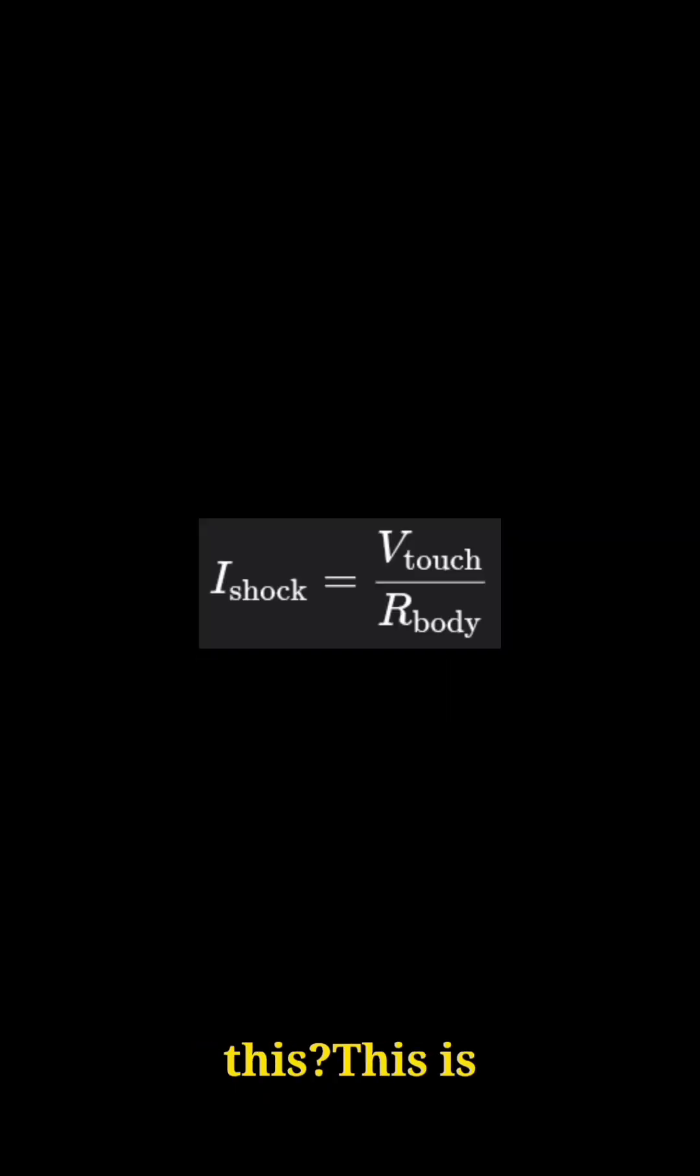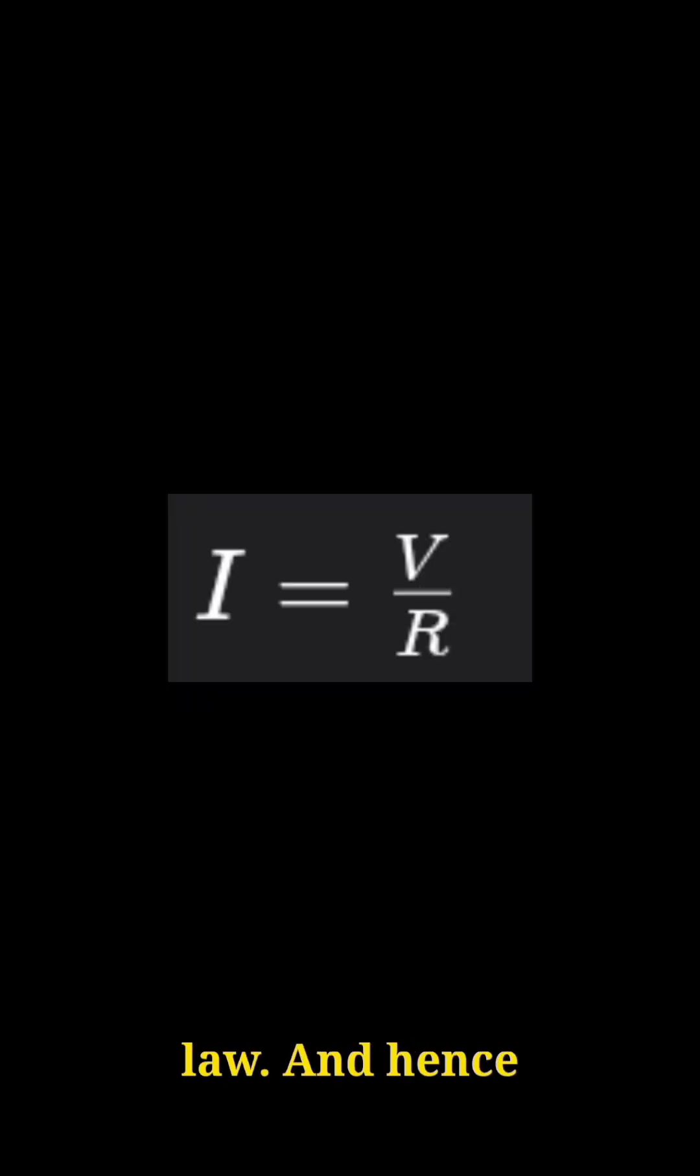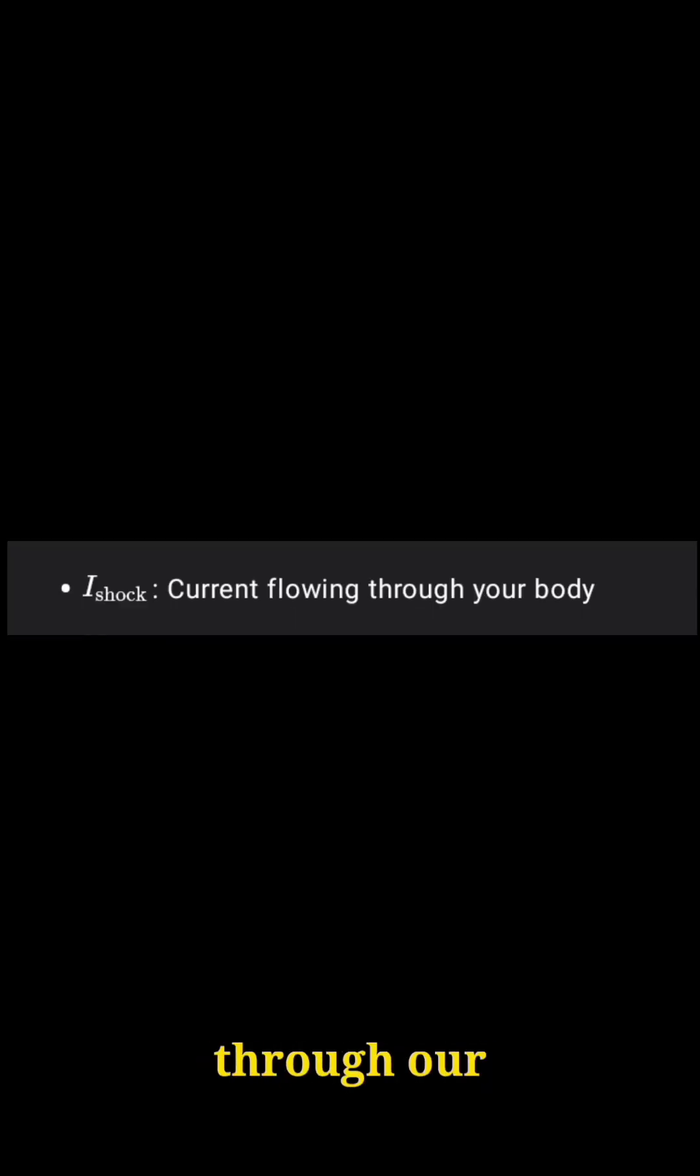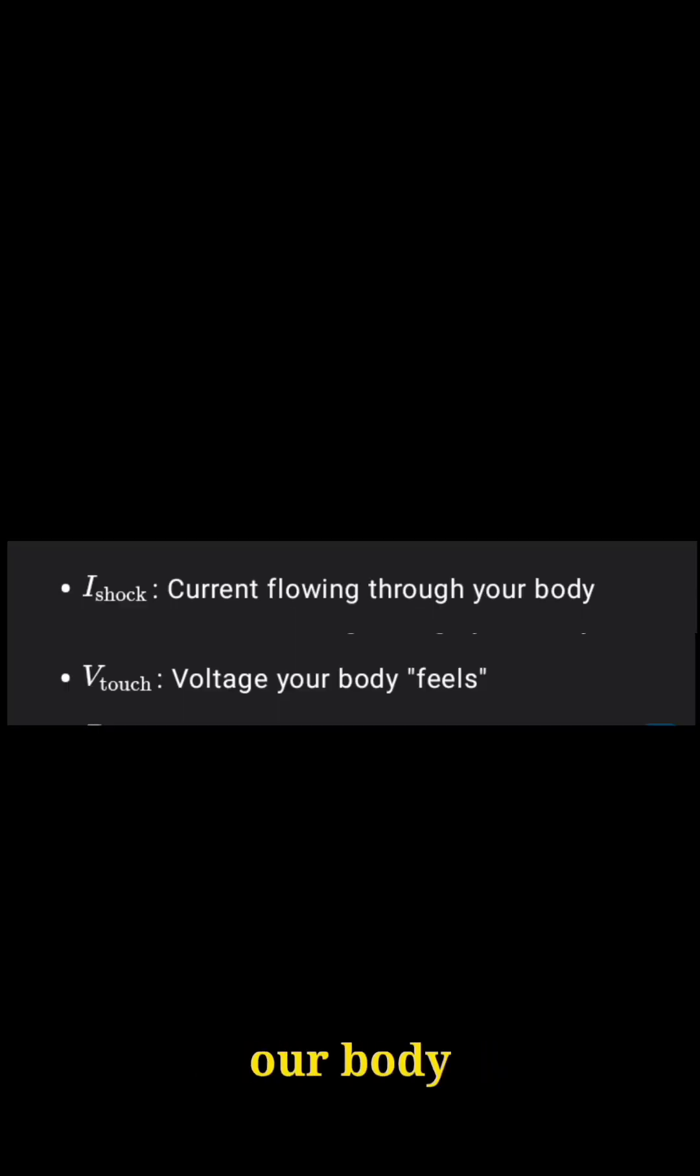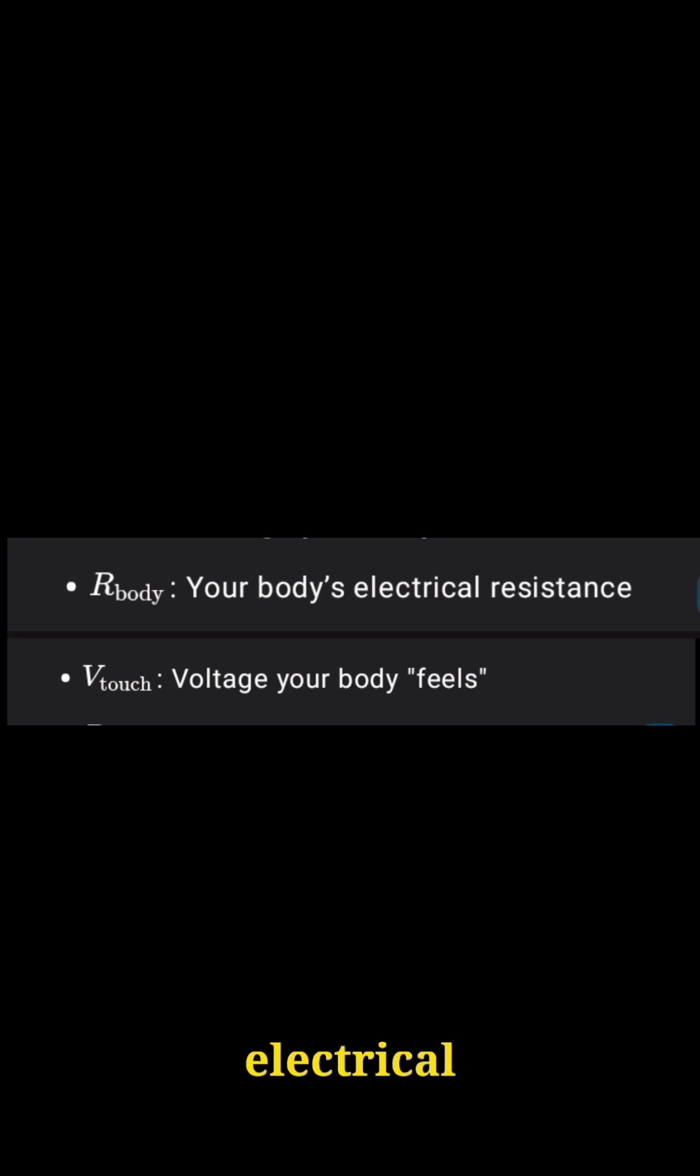I shock equals V touch divided by R body. This very small shock current is the culprit. Using Ohm's law, I equals V over R, and hence I shock equals V touch by R body. I shock is the current flowing through our body, V touch is the voltage our body feels, and R body is the body's electrical resistance.